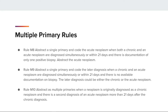Multiple primary rules M8 through M14 in the manual discuss transformations. The general instructions say to start with M1 for each case, so we shouldn't skip to rule M8 if we think we have a transformation case. There is a 21-day rule mentioned in rules M8 through M12. Rules M8 and M9 apply if the patient was diagnosed with a chronic and acute neoplasm either simultaneously or within 21 days. Rule M8 applies if there is documentation on only one positive biopsy, and rule M9 applies if there is no documentation on any biopsy.